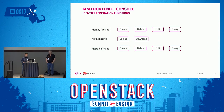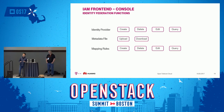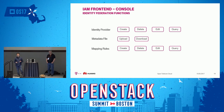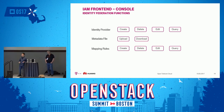Now I'll talk about our front-end console. Currently we support two ways to configure, add, delete, or manage identity providers: one is through the console, and the other is through APIs using enhanced client or proxy (ECP). Using the portal is more convenient. On our console, we can create, delete, edit, and query identity providers, and also upload and download the metadata file. We can also create, delete, edit, and query the mapping rules.